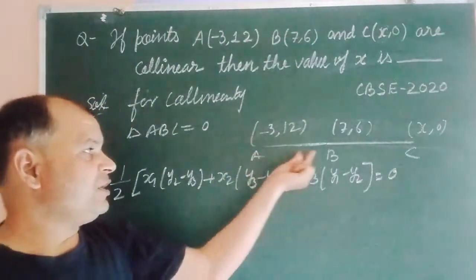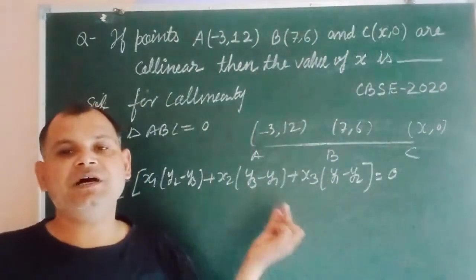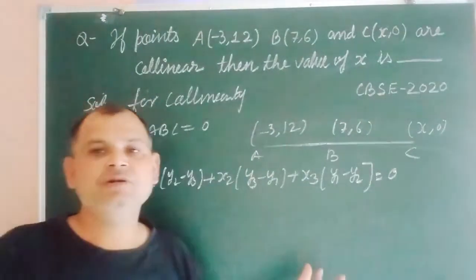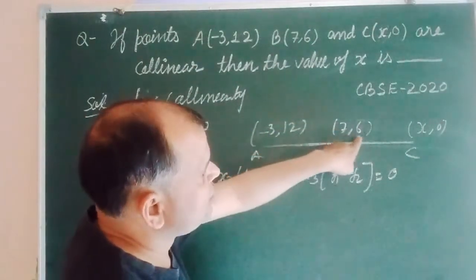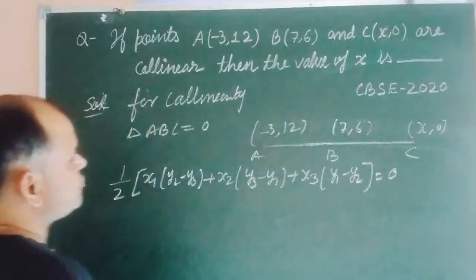Formed by three points A, B, C whose coordinates are X1,Y1, X2,Y2 and X3,Y3. So here X1,Y1 is -3,12, X2,Y2 is 7,6, X3,Y3 is x,0.